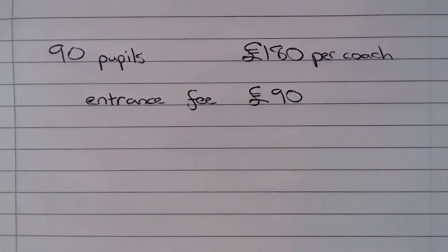In this question we are told that 90 pupils travelled to an exhibition. We know there are two coaches and each coach cost £180 to hire, and the total entrance fee to the exhibition for all pupils was £90. The question asks us how much did each pupil have to pay to meet the total cost.